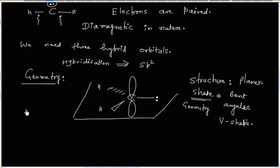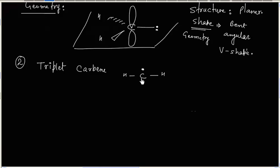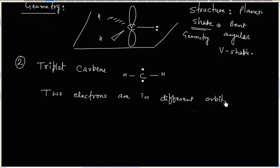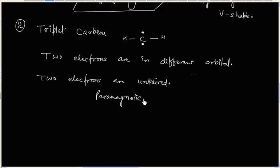Now let us consider triplet carbene. Another type of carbene is called triplet carbene. In triplet carbene, these two electrons are in different orbitals. We have two electrons in different orbitals, and the two electrons are unpaired, so they are paramagnetic in nature.